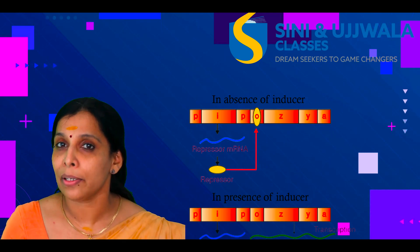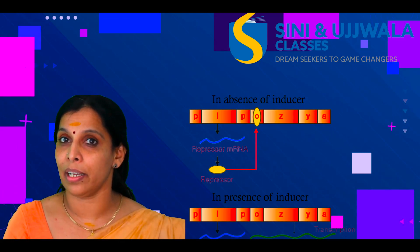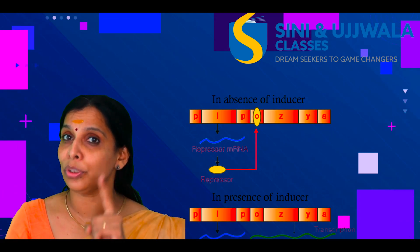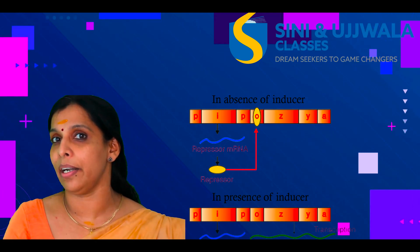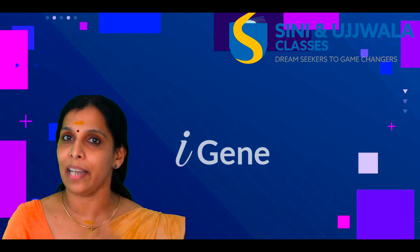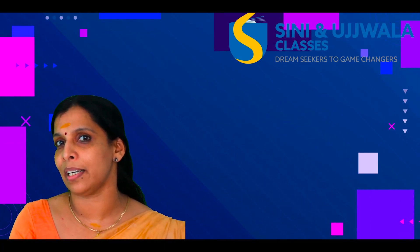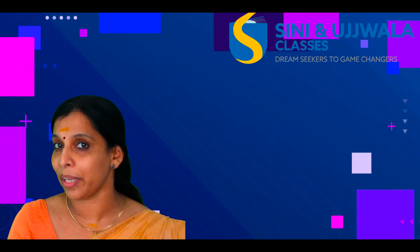What constitutive gene? All-time working. If you want to multiply it, that is the i gene. All-time working gene — the i gene is the full-time repressor gene.